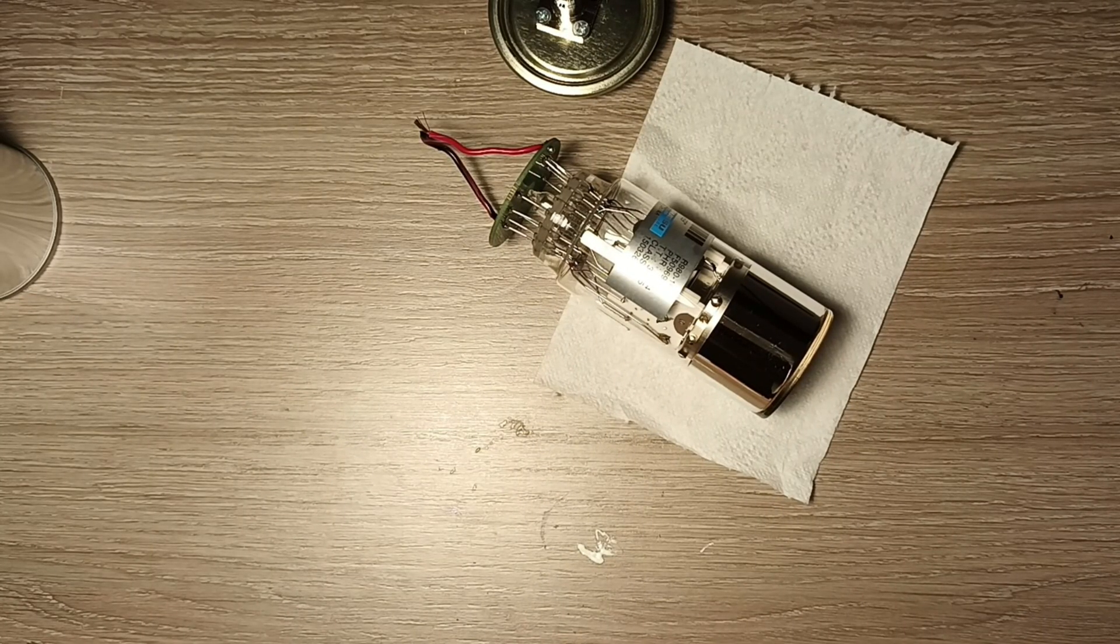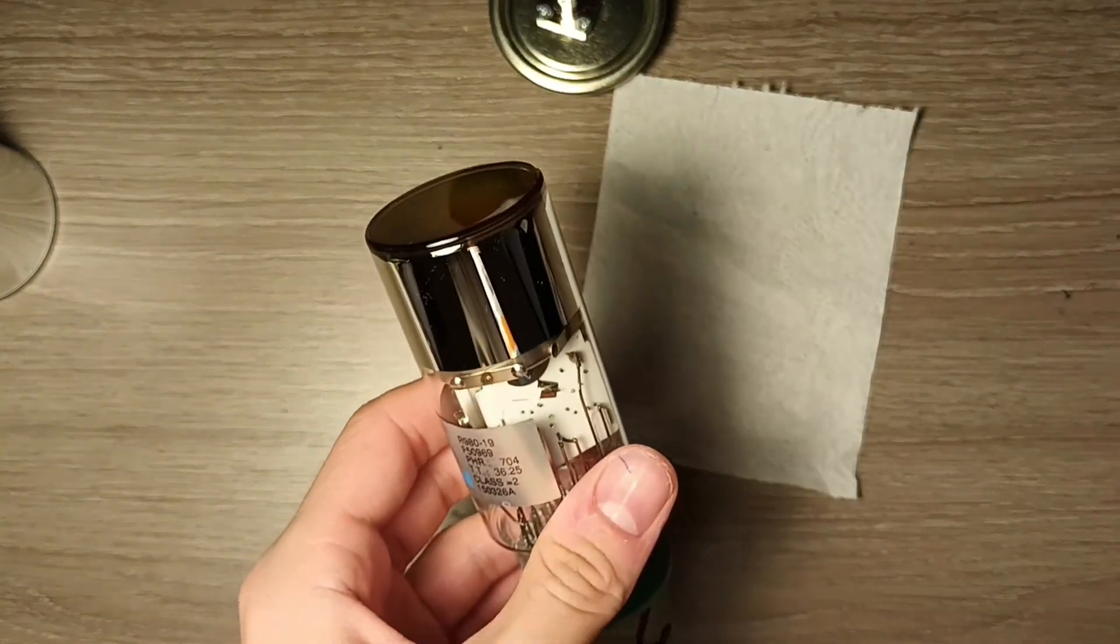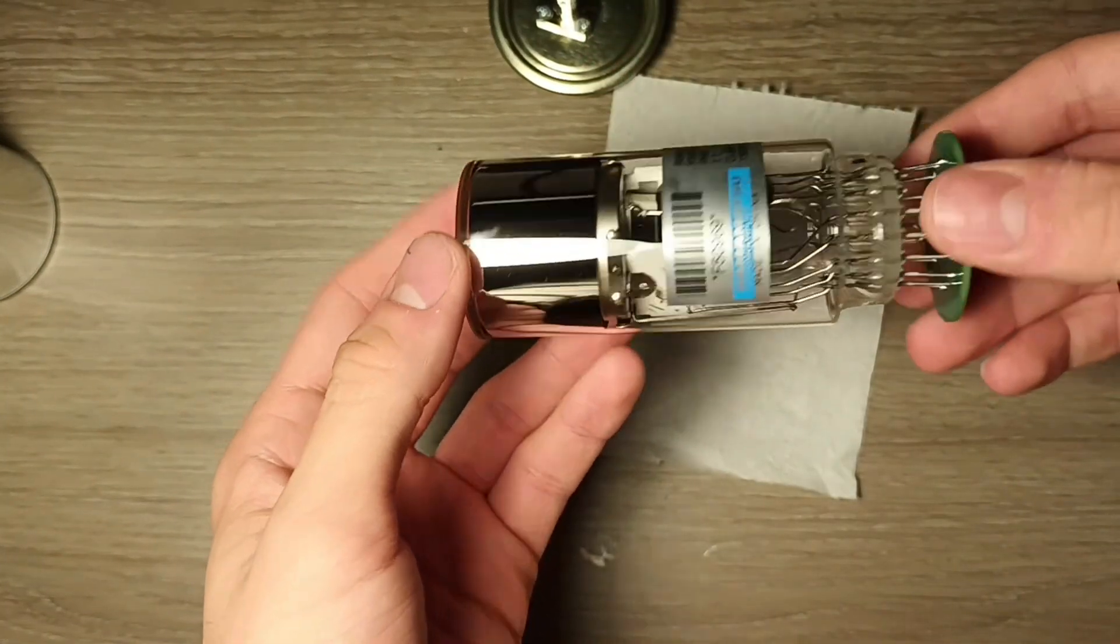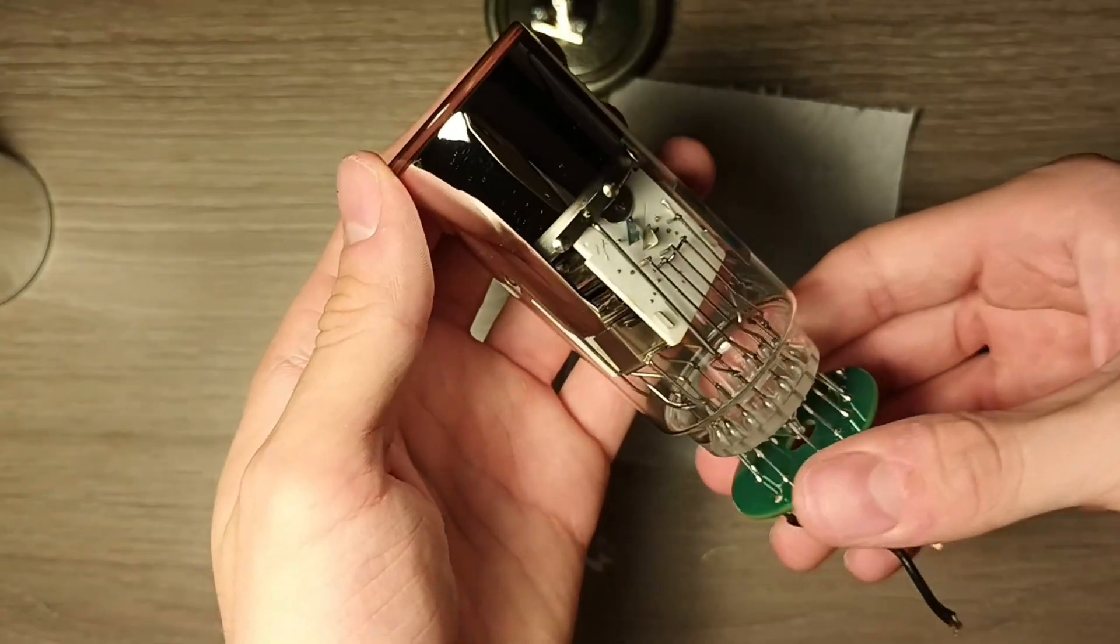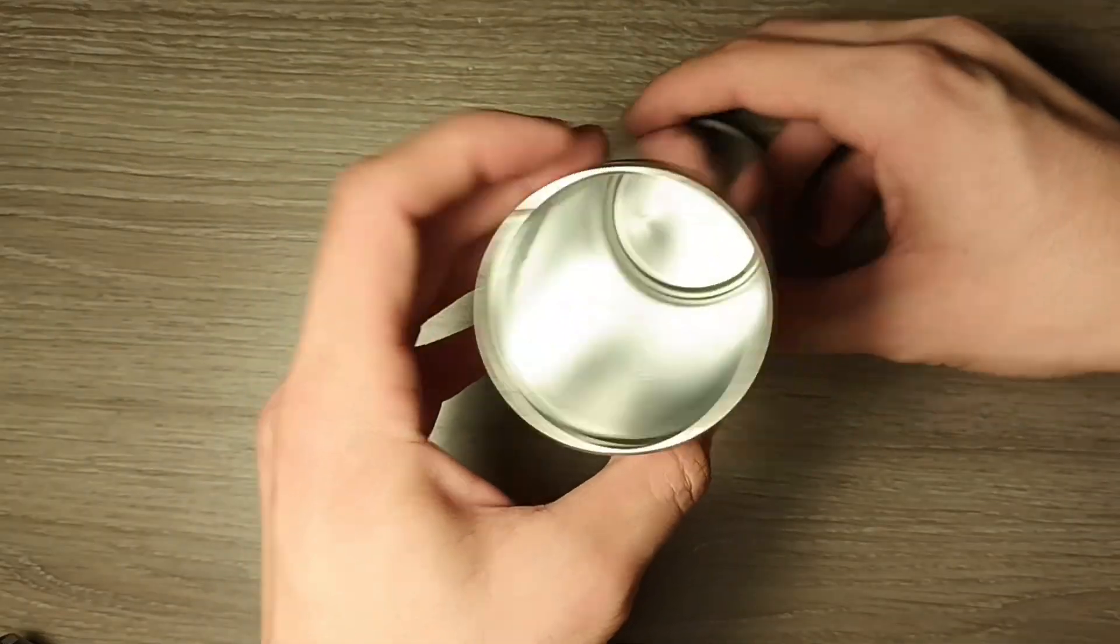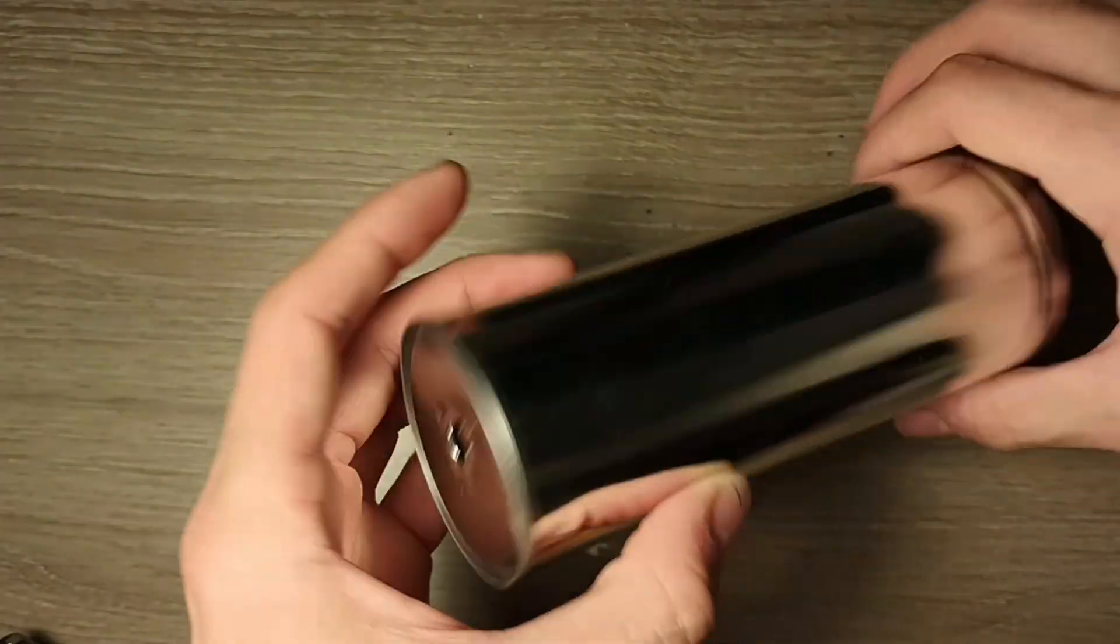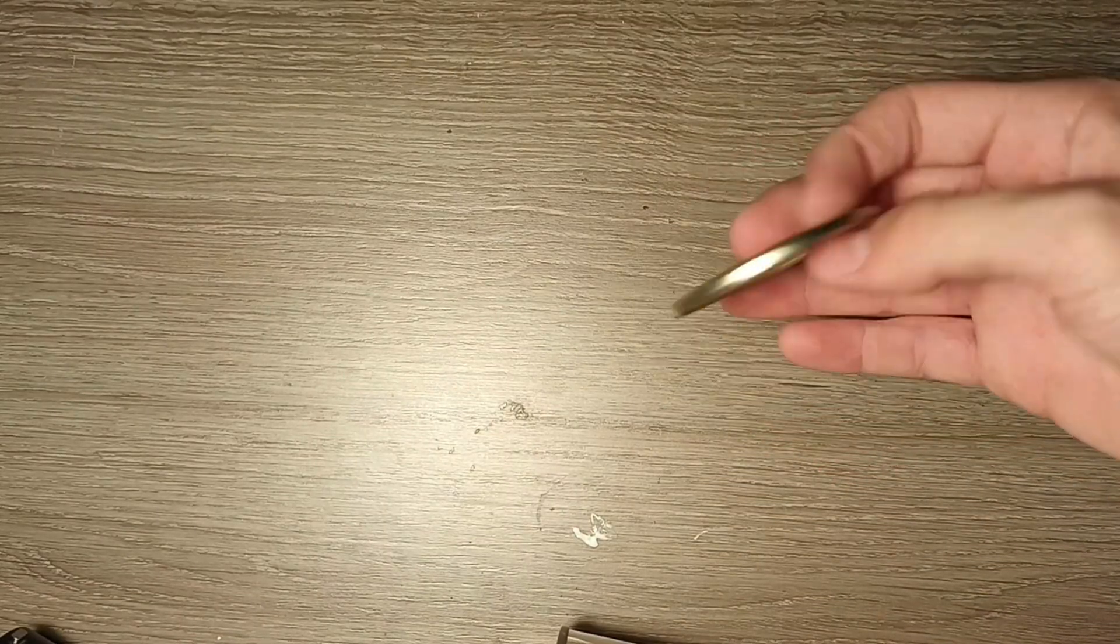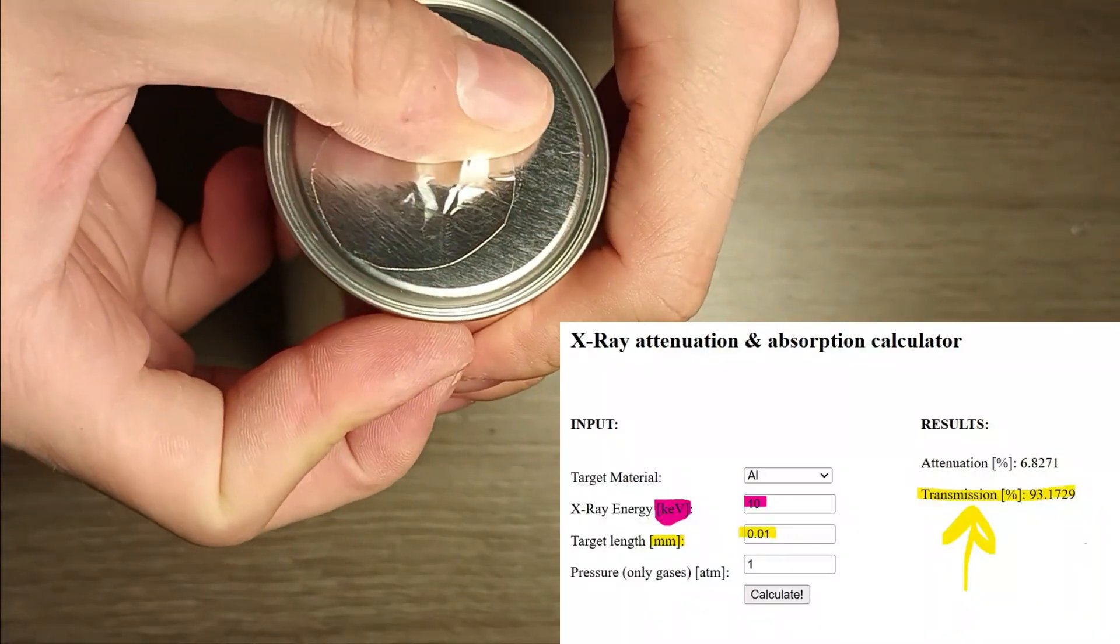First of all we need a photomultiplier tube. This one is the one I'm using and it's a Hamamatsu 980. It has a high impedance voltage divider totaling to 120 megaohm. The photomultiplier tube needs to be inside an enclosure and in this case I'm using a metal can to which I made two holes, one for the incoming X-ray and one for the cable output. If we want to see very low X-rays this is fundamental to use an extremely transparent window to the energy that we are interested, and for this reason I'm gonna use aluminum tape.